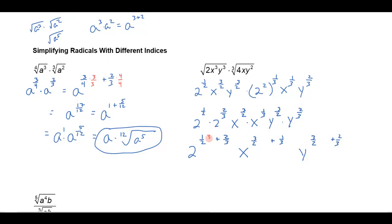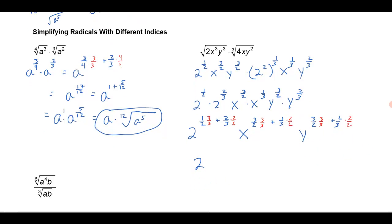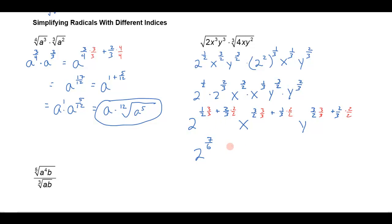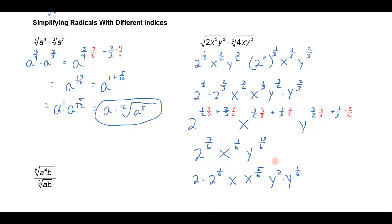Let's get our common denominator. I'll multiply by 3 over 3 and 2 over 2 for each pair of fractions. This gives me 2 to the 3 plus 4, that's 7-sixths; x to the 9 plus 2, that's 11-sixths; and y to the 9 plus 4, that's 13-sixths. Now I'll think of 7-sixths as 1 and 1-sixth, so I write 2 times 2 to the 1-sixth. And 11-sixths is 1 and 5-sixths, so I write x times x to the 5-sixths. And 13-sixths is 2 and 1-sixth, so I write y squared times y to the 1-sixth.